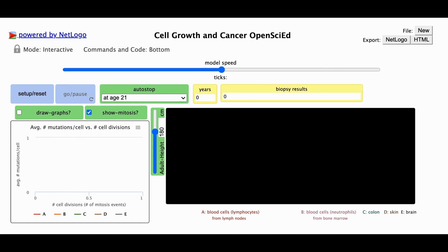In the cell growth and cancer computer simulation, your screen will look like this. There are a few different buttons that we can manipulate to change the conditions of the simulation, so I'll show you how those work right now.